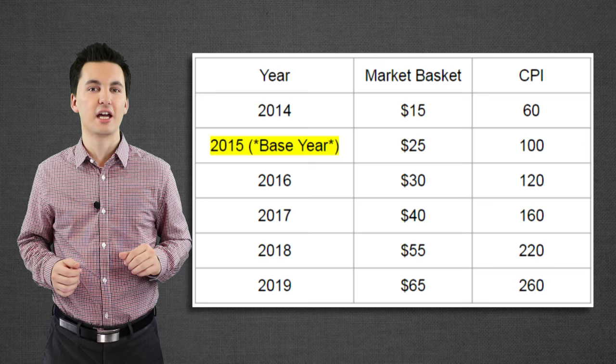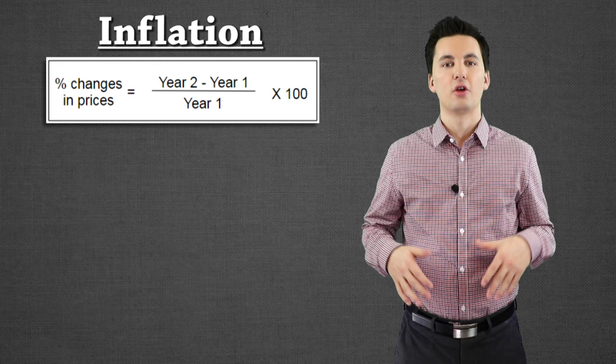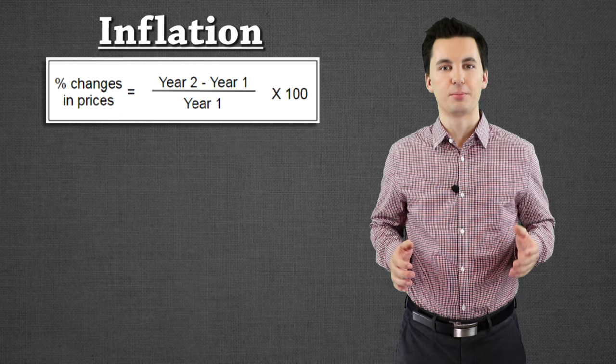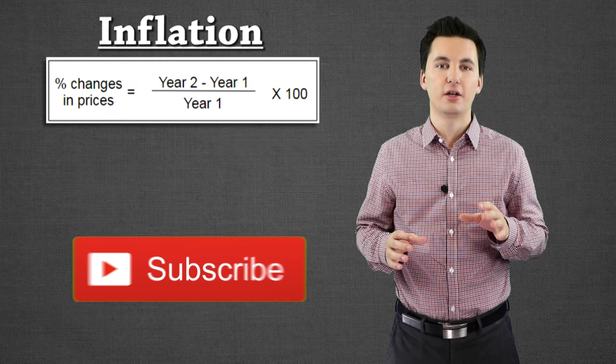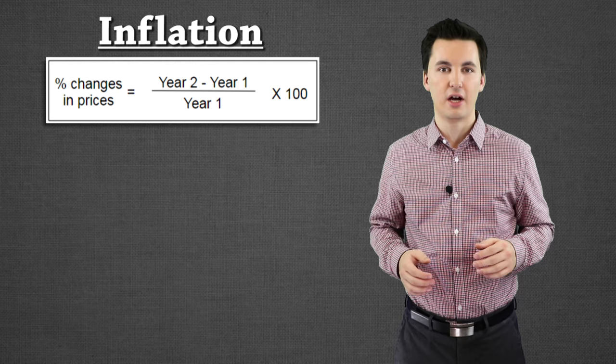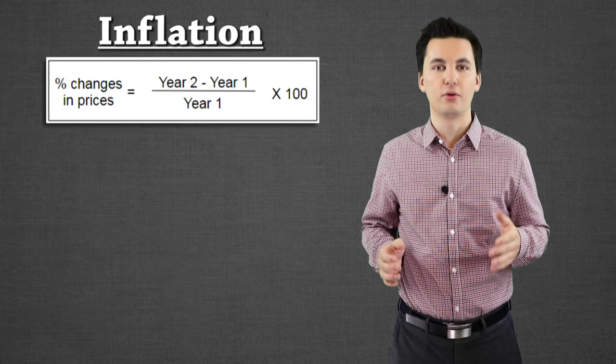Now let's look at how to find the inflation rate between two years. When calculating the inflation rate between two years, we're going to use the following formula: year two minus year one, divided by year one, times 100. When looking at a problem, you have to have the previous year's data to be able to find the inflation rate between two years. Let's take a second and look back at the CPI data we just calculated — 2014 to 2019.